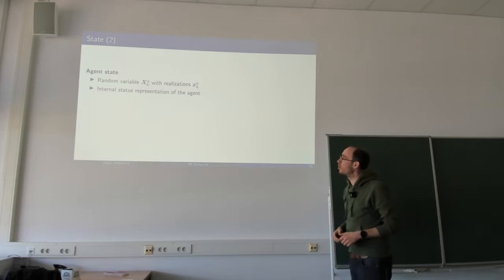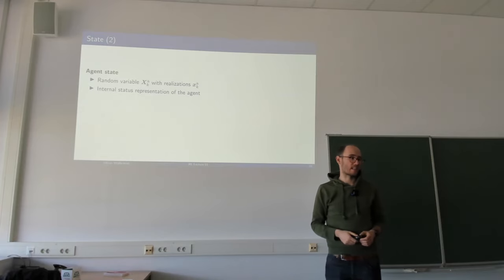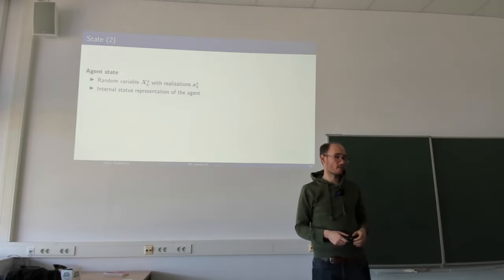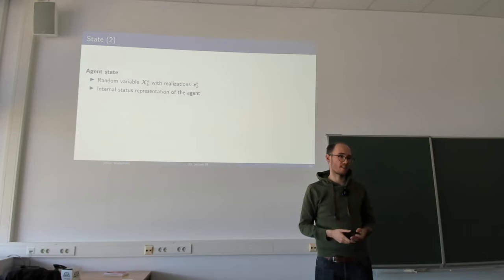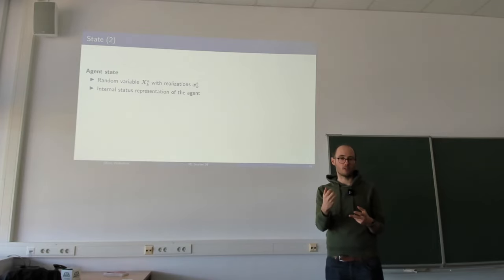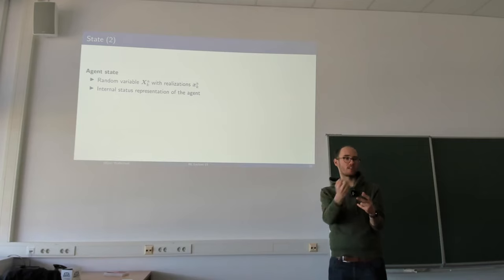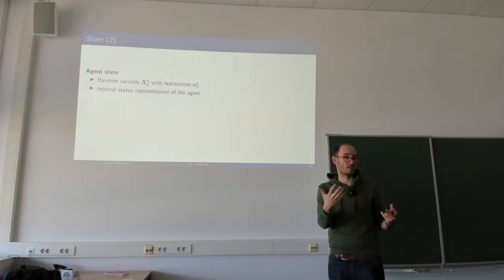The agent state is more or less the same as the environment state but from the viewpoint of the agent. The agent state describes everything the agent knows, either from the environment or from its own memory. For example, if the agent has a decision policy depending on past decisions, then the agent also has an internal memory state, making the agent's state space different from the environment's state space.